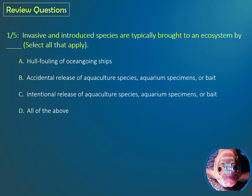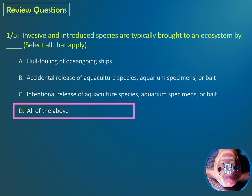Review question one: Invasive and introduced species are typically brought to an ecosystem by — select all that apply. A: hull fouling of ocean-going ships. B: accidental release of aquaculture species, aquarium specimens, or bait. C: intentional release of aquaculture species, aquarium specimens, or bait. D: all of the above. The correct answer is D, all of the above.